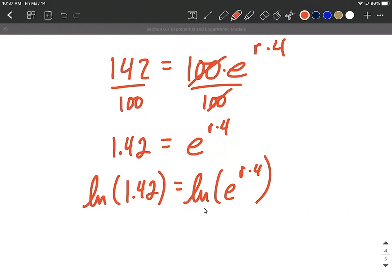Natural log means log base e. When you have e to a power here these are inverse functions of one another. We get used to this, the natural log is typically utilized whenever e is our base because we get really nice canceling out over there on the right hand side. We can say the natural log of 1.42 is going to equal our exponent, so r times four.